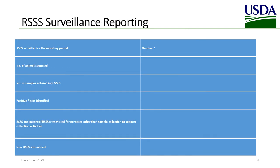For RSSS surveillance reporting, include the number of animals sampled, the number of samples entered into BSLS, the number of positive flocks identified, and the number of RSSS and potential RSSS sites that were visited for purposes other than sample collection to support collection activities. Also include the number of new RSSS sites added.